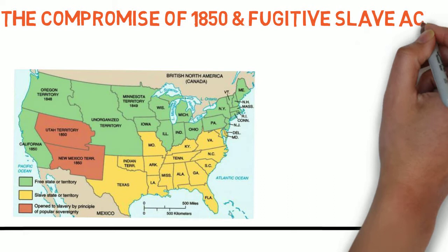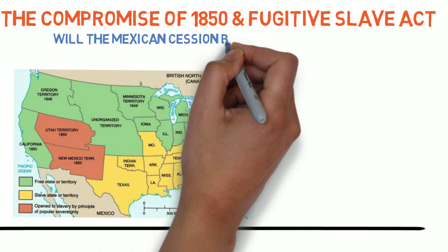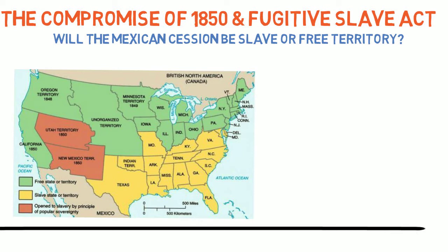And that brings us to the next major milestone on the road to the Civil War: the Compromise of 1850. After the Mexican-American War, California, Colorado, Utah, Arizona, and New Mexico became U.S. territory. And once again, the question of whether or not slavery would be allowed in those territories was raised. The earlier Missouri Compromise did not apply to these new territories.